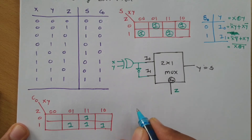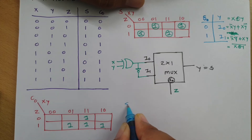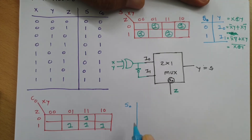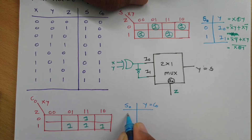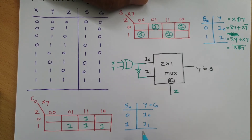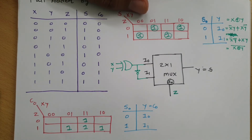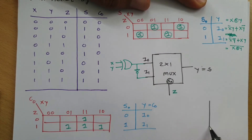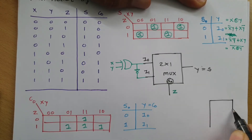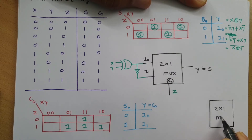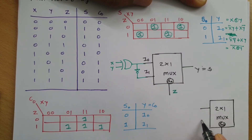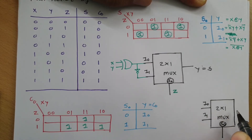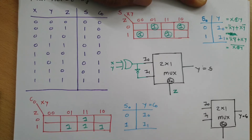The next step is to write the truth table of the 2-to-1 MUX. The truth table is simple: if the selection line is 0, input I0 is selected; if the selection line is 1, input I1 is selected. We draw a basic 2-to-1 MUX with selection line S0, two inputs I0 and I1, and output y which should equal C0.